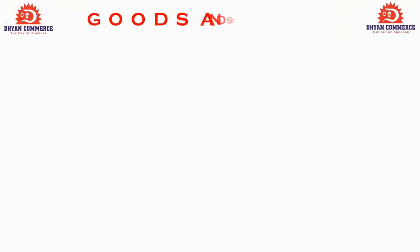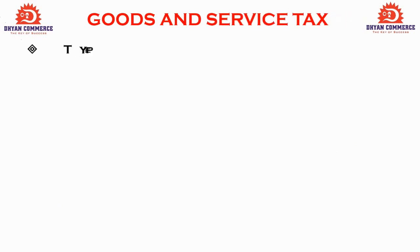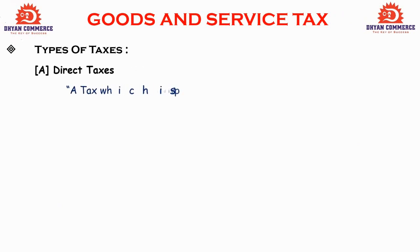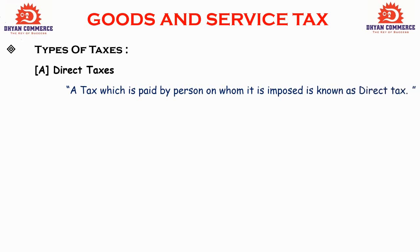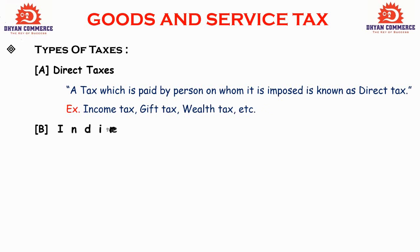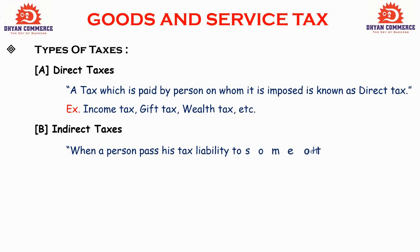Before discussing GST, we need to understand the types of taxes. First is direct taxes — a tax which is paid by the person on whom it is imposed is known as a direct tax. Examples include income tax, gift tax, wealth tax, etc. Second is indirect taxes — when a person passes his tax liability to some other person, it is known as indirect taxes.